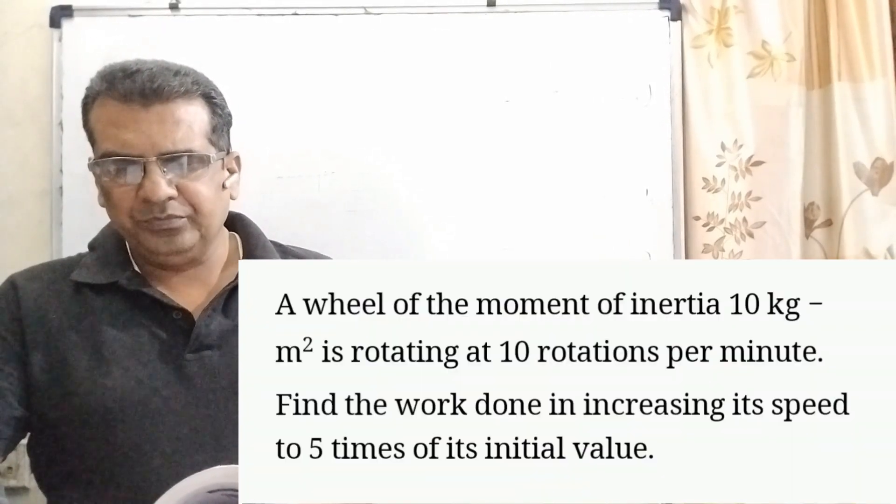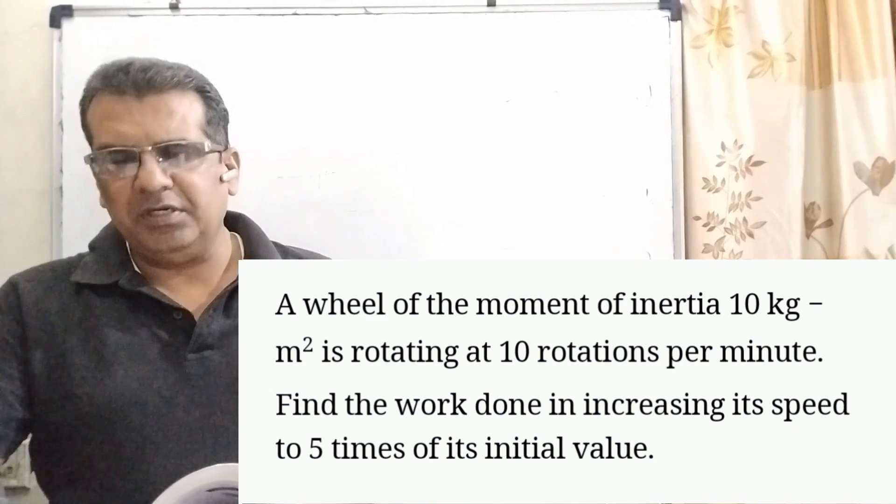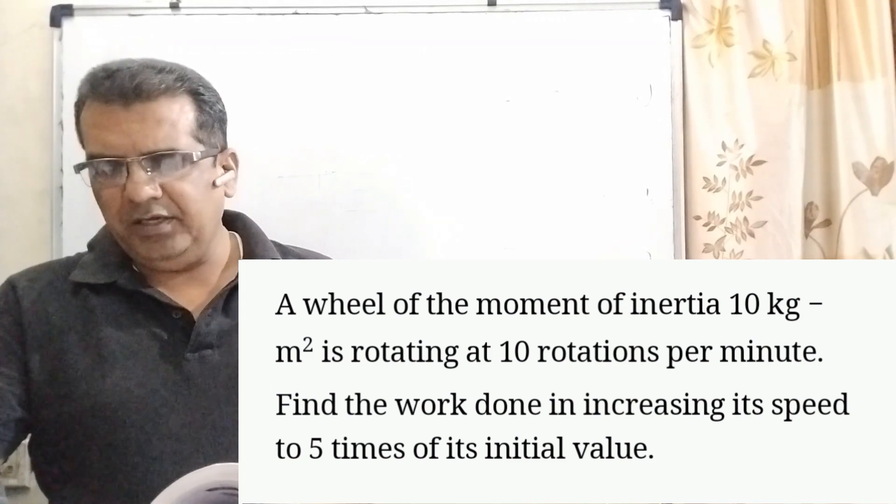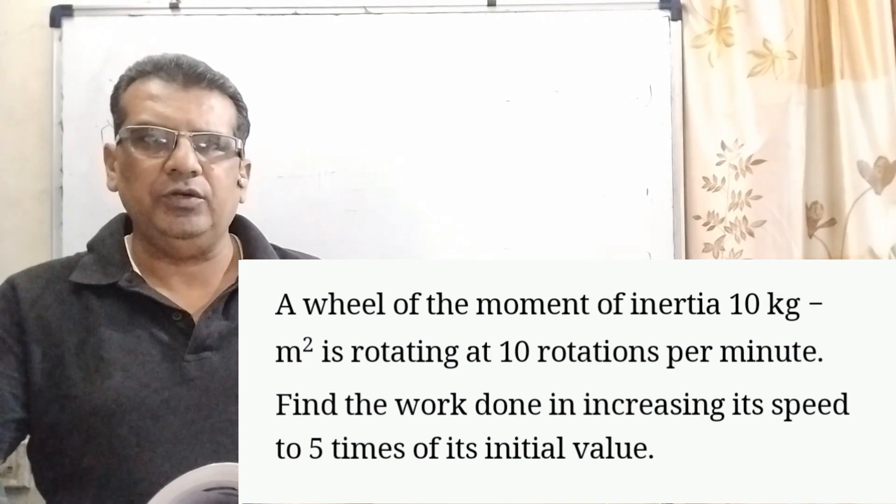So, here is the question. A wheel of moment of inertia 10 kilogram meter square rotates at the rate of 10 revolution per minute. Find the work done in increasing its speed 5 times of its initial value.